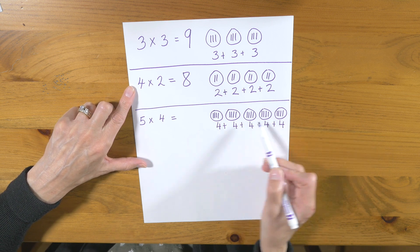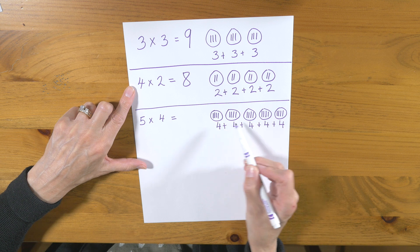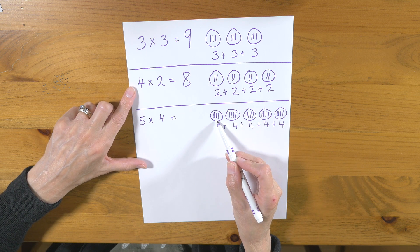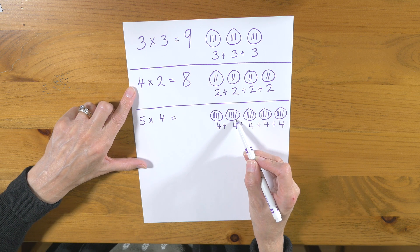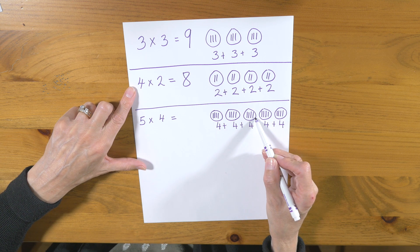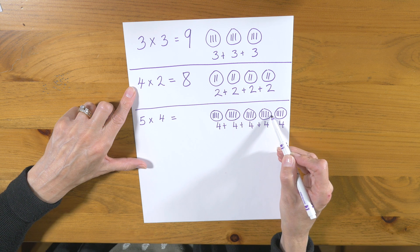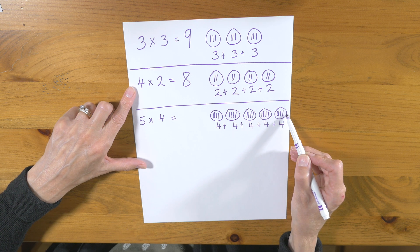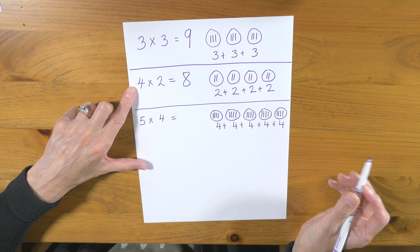But I know how to add these up. 4 plus 4 plus 4 plus 4: 4 plus 4 is 8, plus 4 more is 12, plus 4 more is 16, and 4 more is 20.